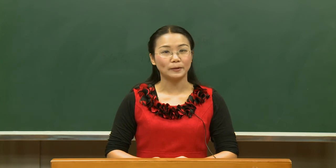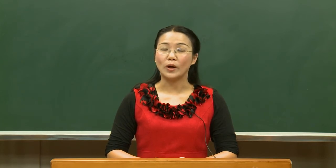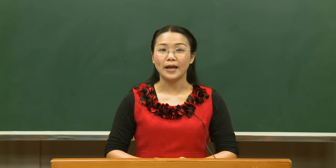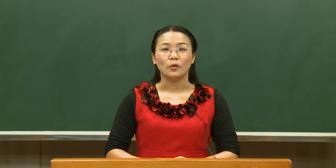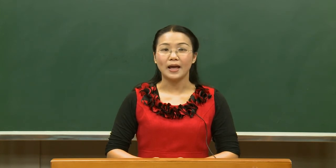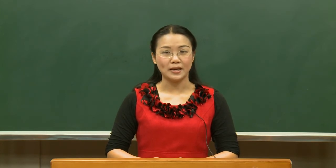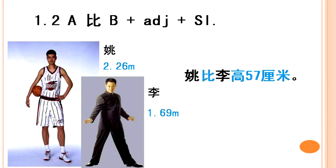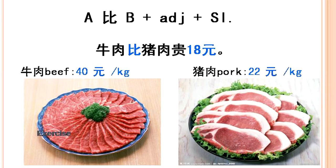A比B + adjective only indicates the difference between A and B. If we want to tell how different A is from B, we can add specific details after the adjective. So the pattern becomes: A比B + adjective + specific information. For example: 姚比李高五十七厘米 (Yao is 57 centimeters taller than Li).